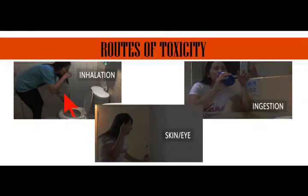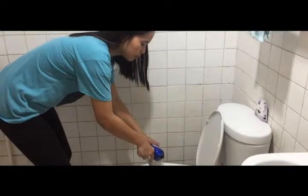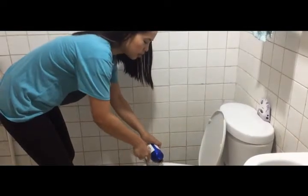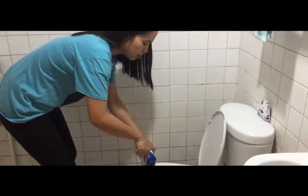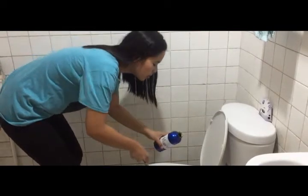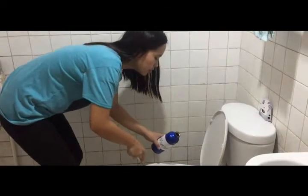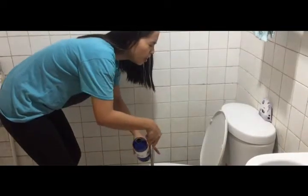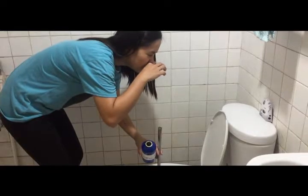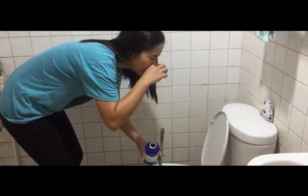Inhalation is an important route of exposure to muriatic acid. Its odor and highly irritating properties generally provide adequate warning for acute high-level exposures. Muriatic acid vapor is heavier than air and may cause asphyxiation in closed, poorly ventilated, or low-lying areas.